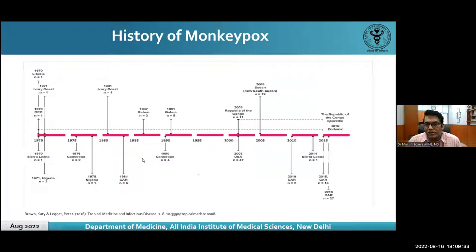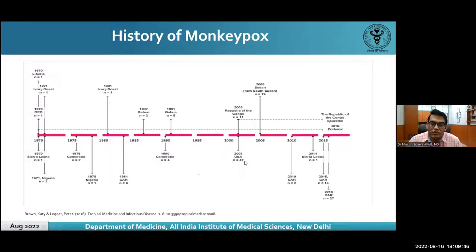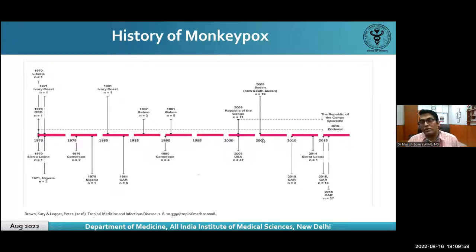Something has changed over the last two decades. In USA 2003, 47 cases were documented, transmitted through a pet prairie dog. Subsequently Congo had 11 cases, Sudan 19 cases. The number of cases has been gradually increasing, partly due to better surveillance, but we also need to ask whether the virus itself is changing.